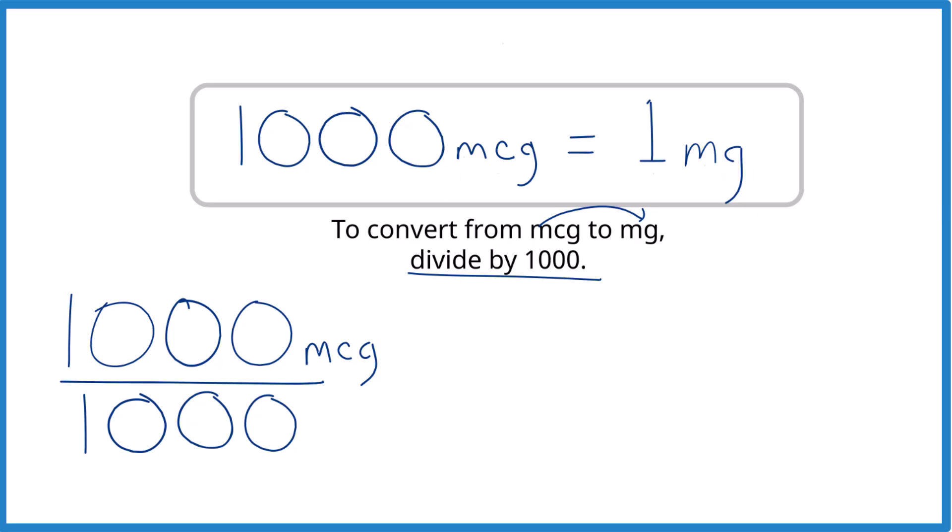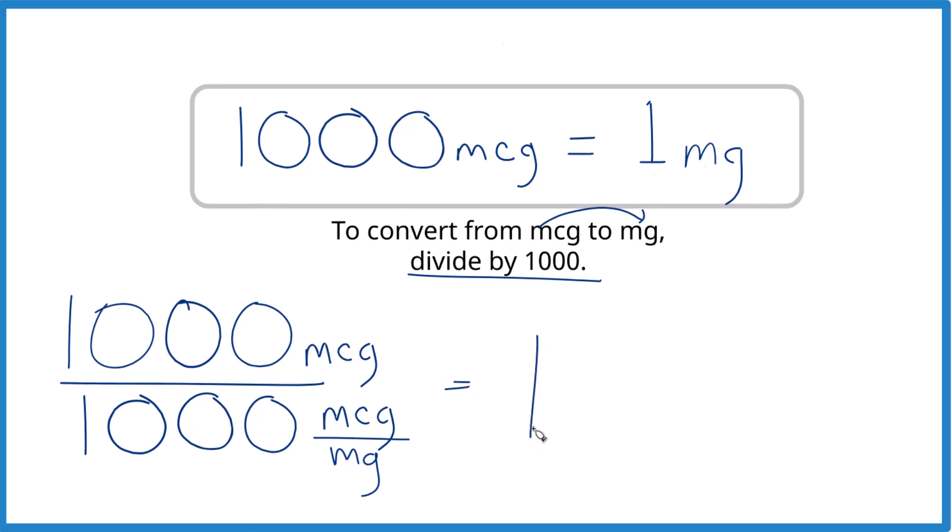Remember, that's micrograms per milligram. So we can put our units here. And now, when we divide, we find that 1,000 divided by 1,000, that's just one. And the micrograms on the top and the bottom, they cancel out, and we end up with milligrams.